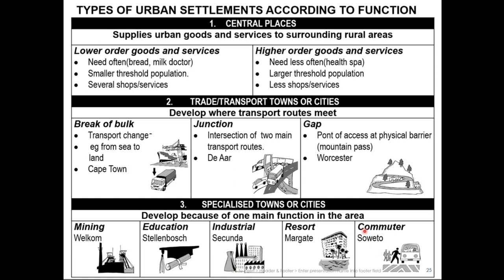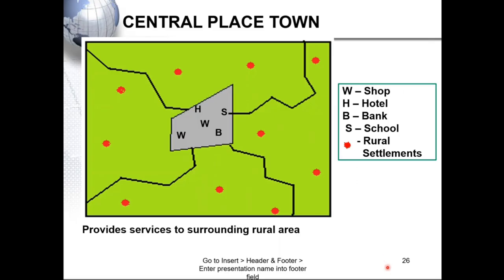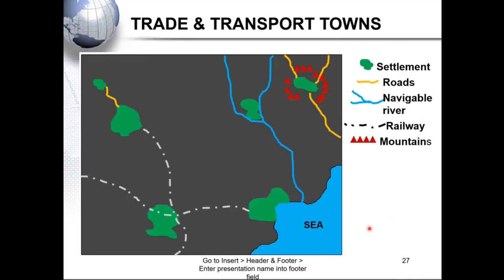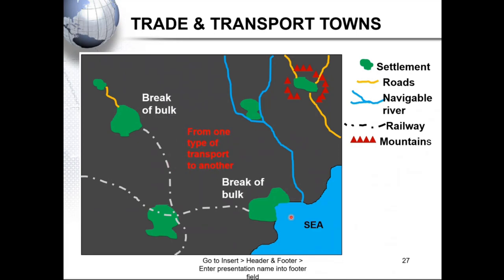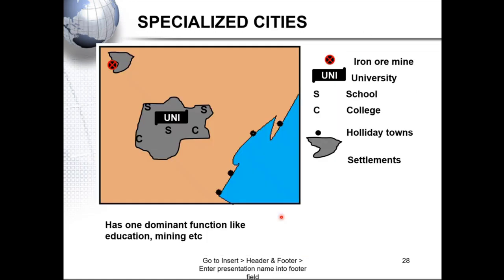Grade 12, it's important that you know the definitions. The last one over here is specialized towns. For example, if you take Kimberley — it's a mining town; Stellenbosch — educational; Sasolburg — industrial; Langebaan — resort; Soweto — commuter. Each of these towns develops a specific function.